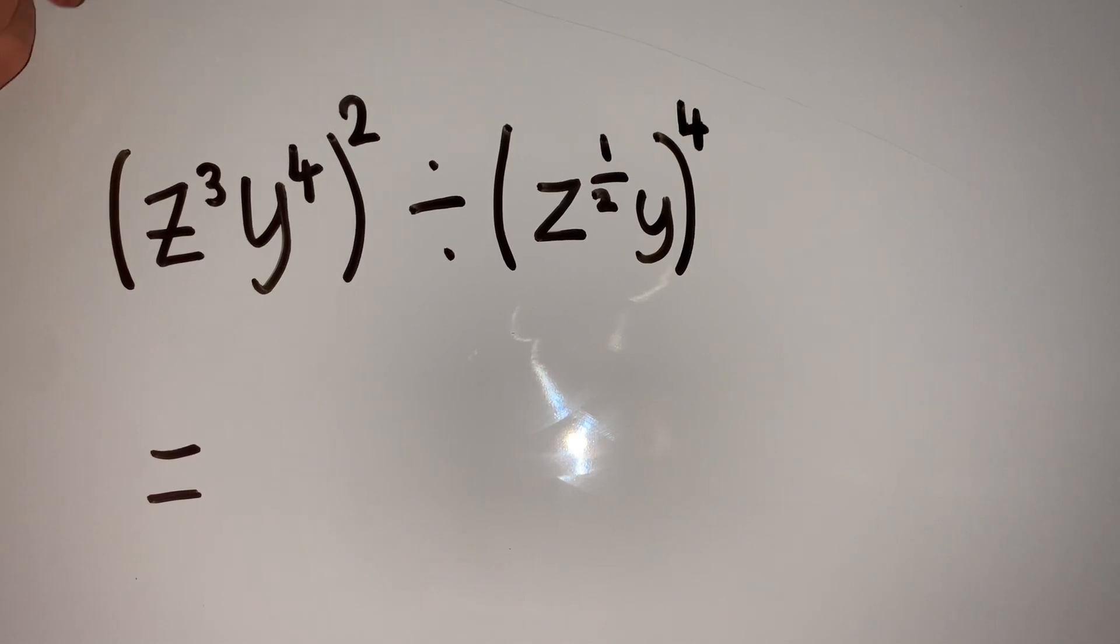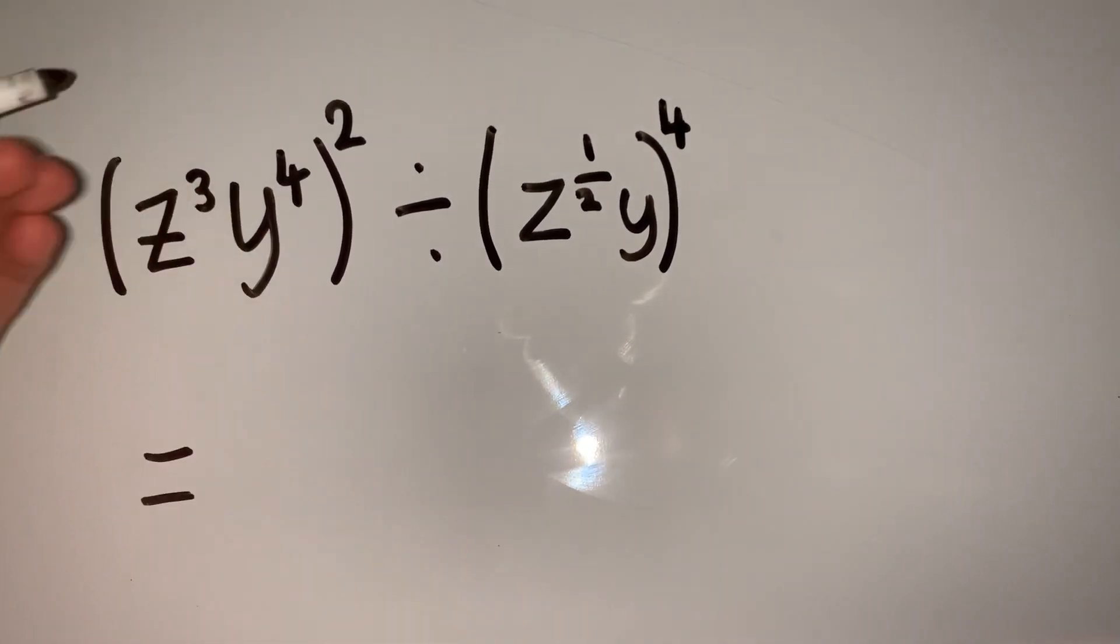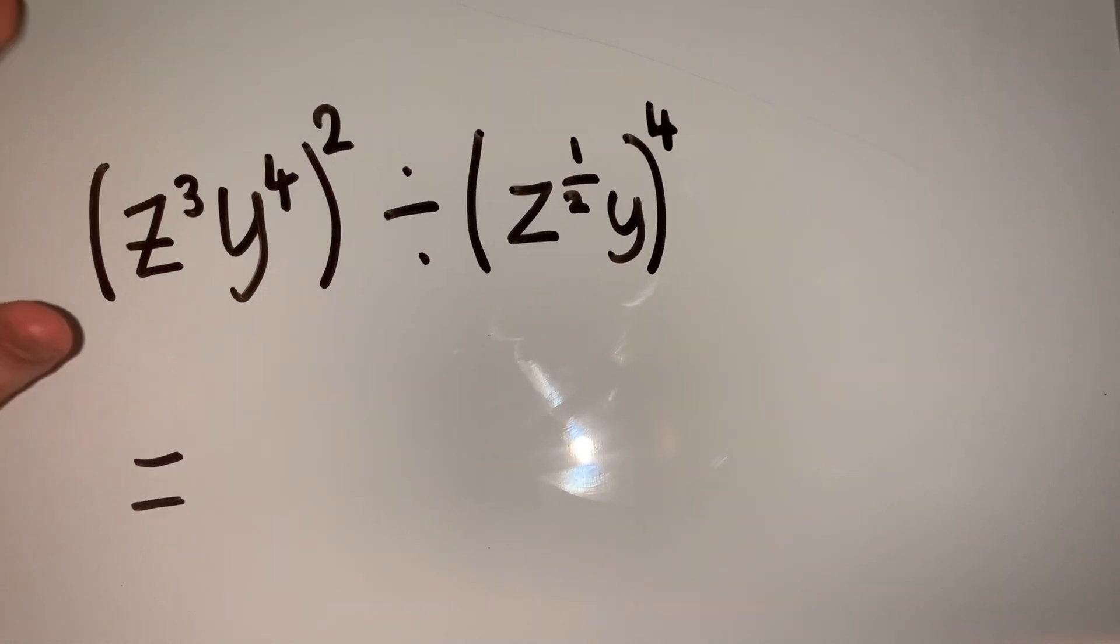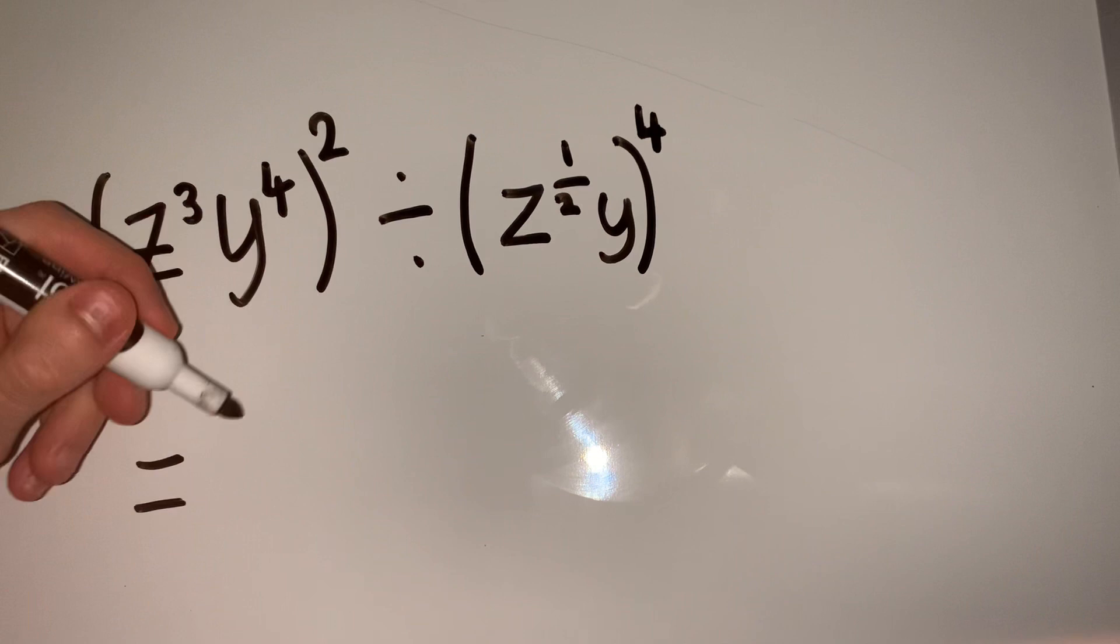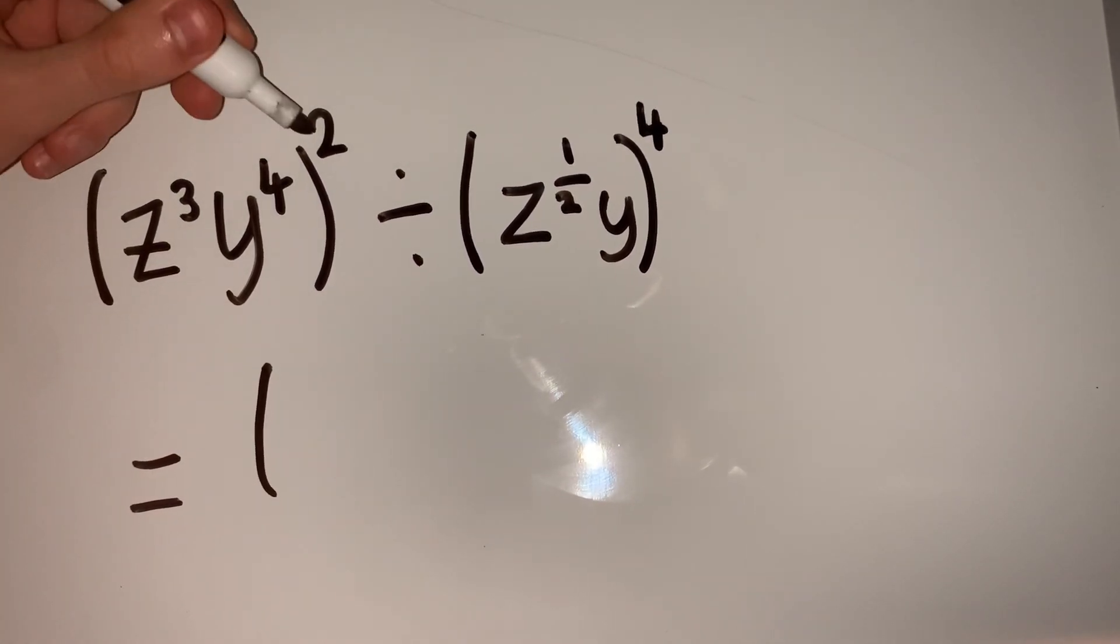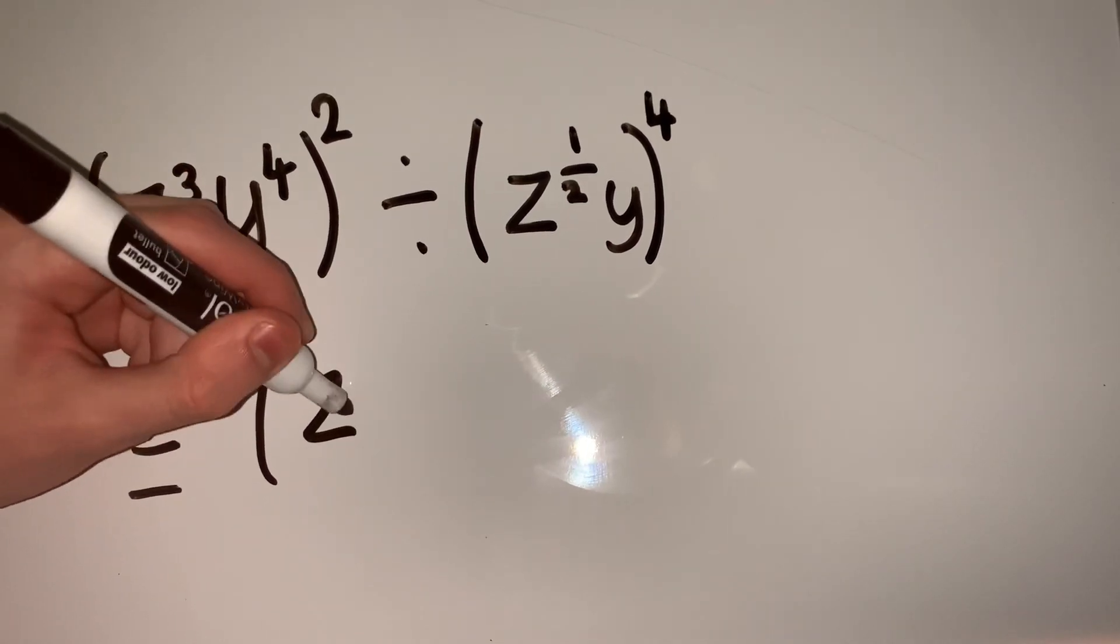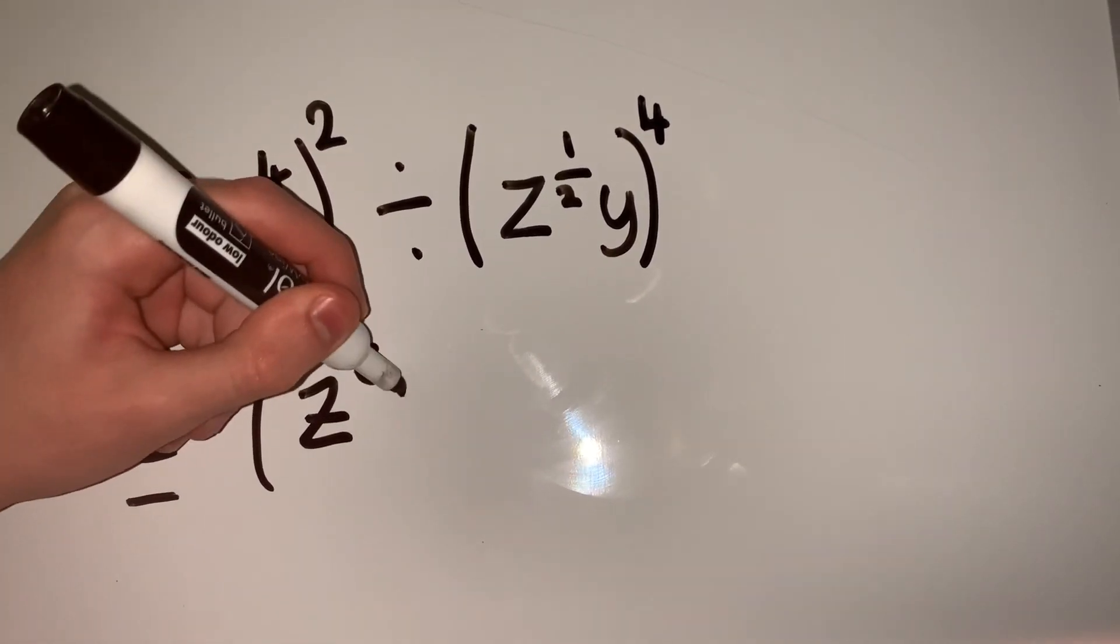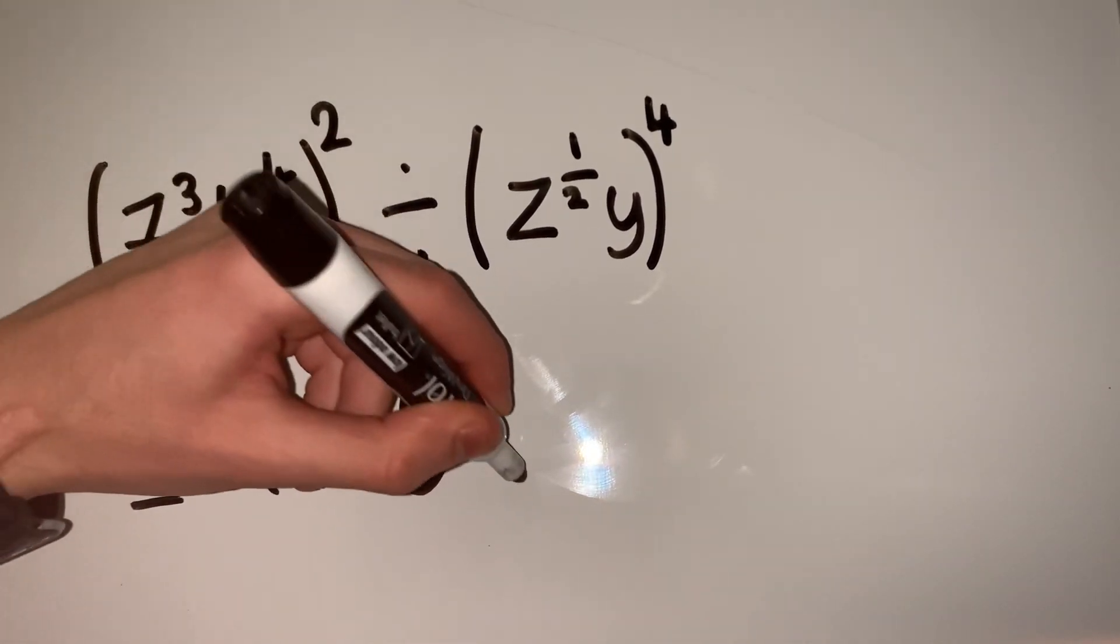Here's the last example. This one involves more than one rule at once and is a bit trickier, but let's go through it bit by bit. If we deal with the first bracket, remember when raising to a power, we multiply it out. So we have z^(2×3) equals z^6, multiplied by y^(4×2) equals y^8.